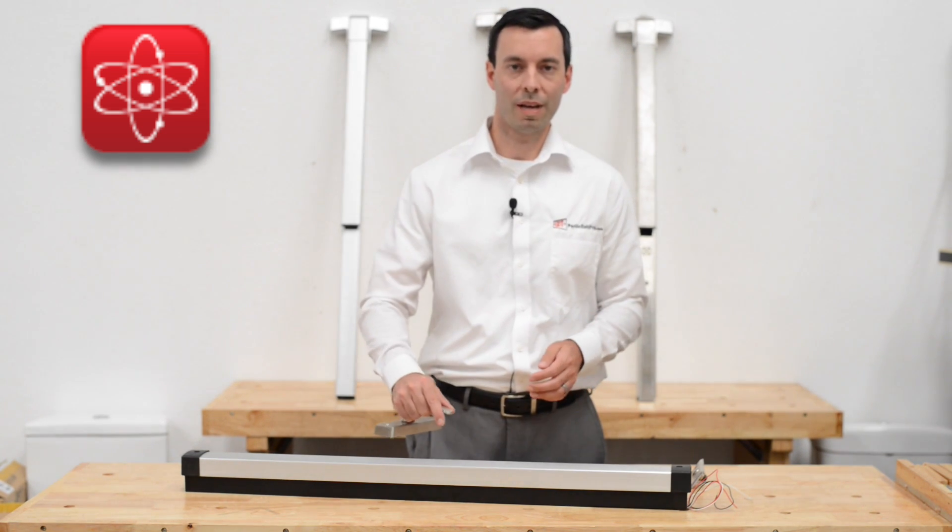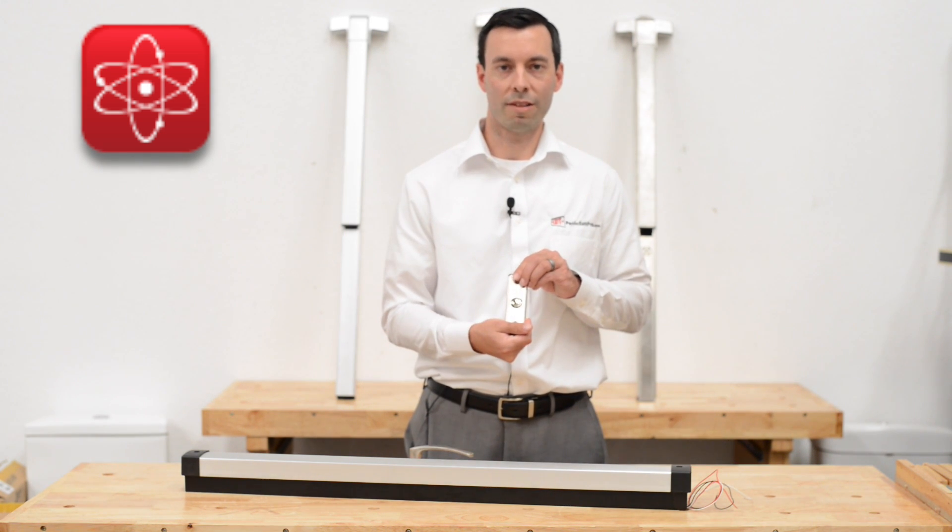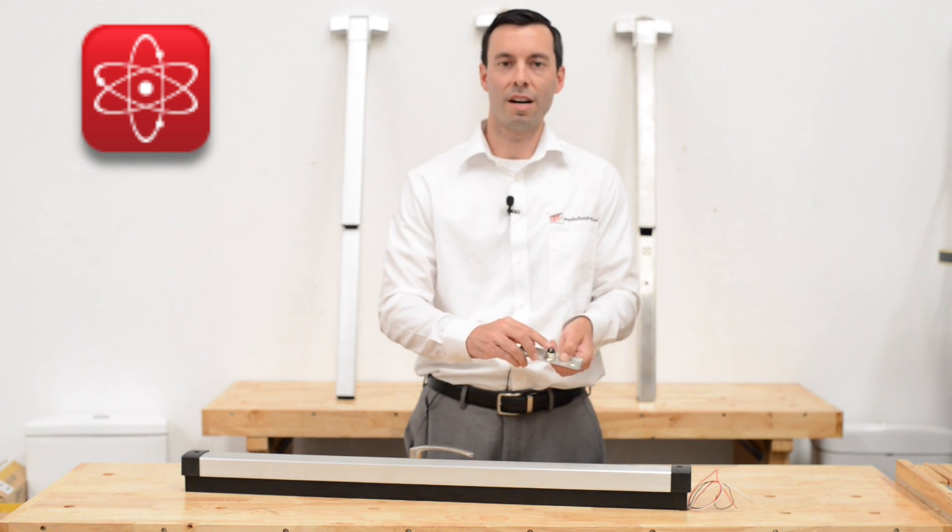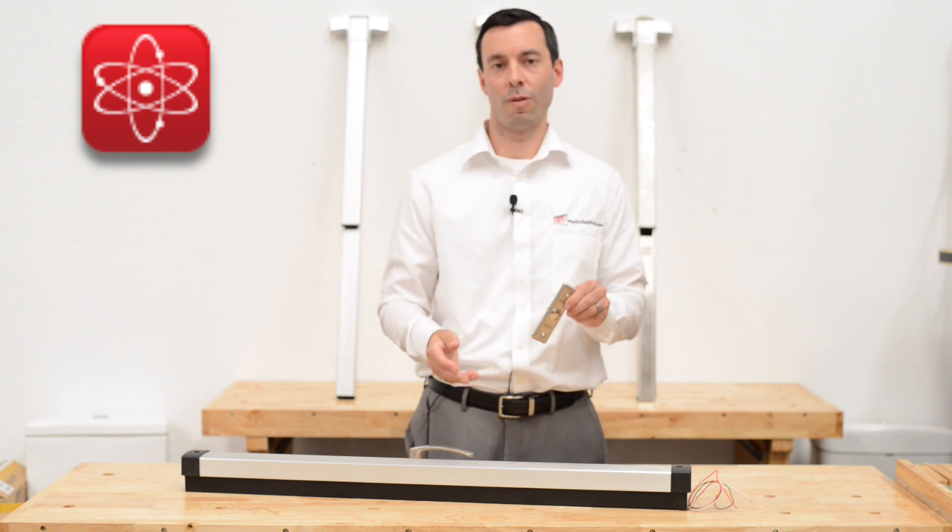But if you have a system that, let's say you're using one of these, and you are also using something such as a door exit button. When you press this button, all it is doing is making a contact between these two terminals, which releases the lock. I release the button, it is now locked again.